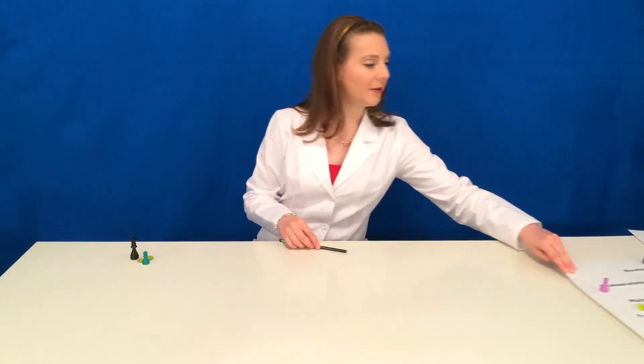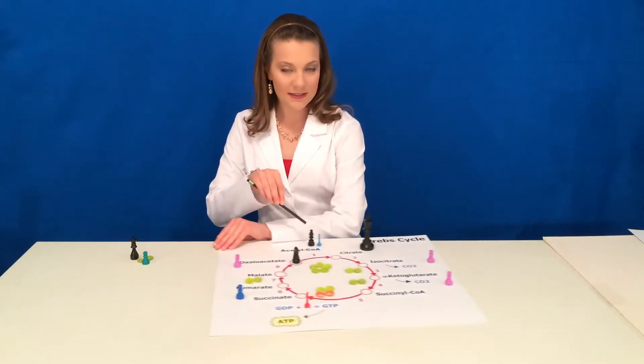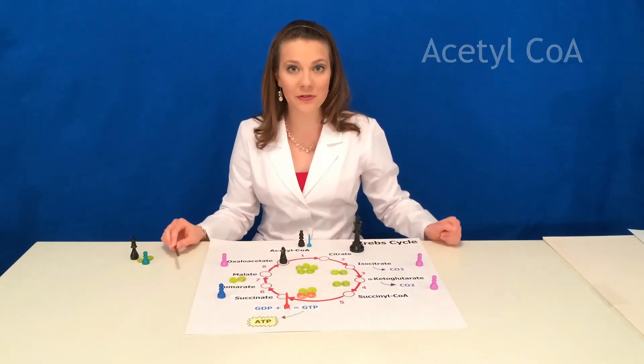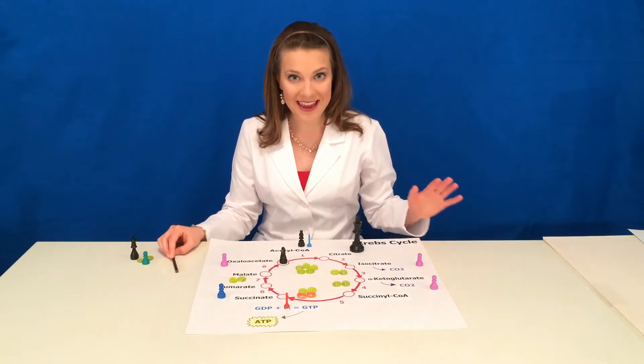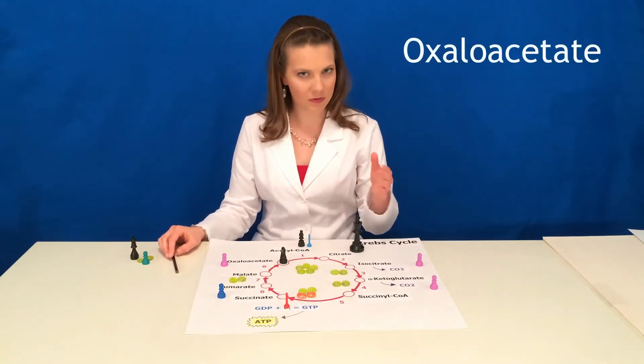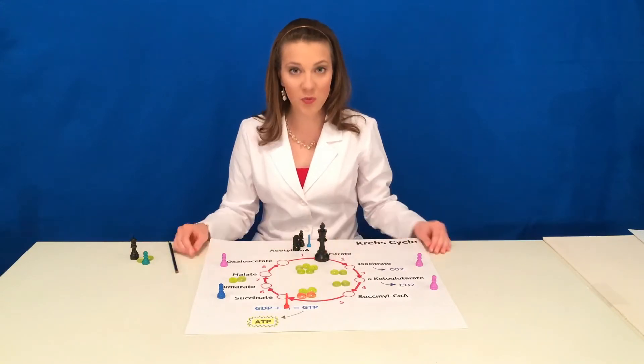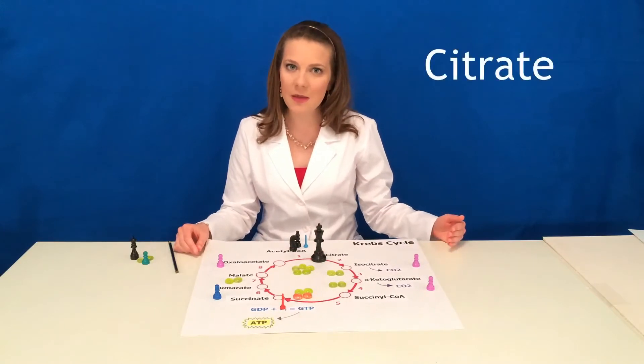Let's go back to the Krebs cycle. In step one, acetyl coenzyme A enters the mitochondrial matrix where the Krebs cycle takes place. It bonds to oxaloacetate, which was already in the Krebs cycle, to form a super molecule called citrate.